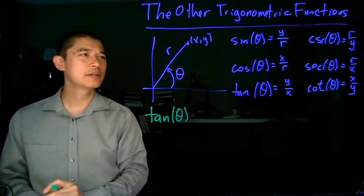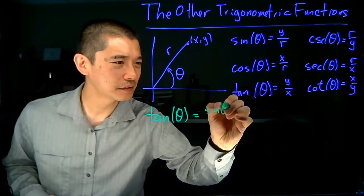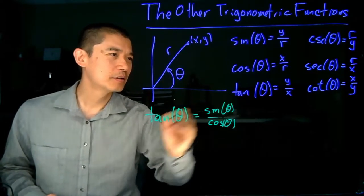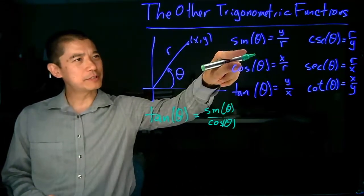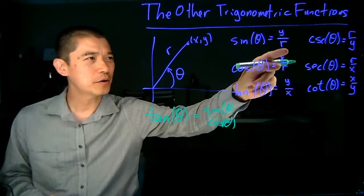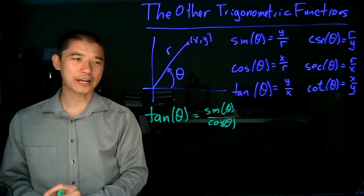Tangent of theta turns out to be sine theta over cosine theta. So let's sort of think through what happens. If we do sine theta over cosine theta, we have y over r over x over r. And those r's end up canceling out, so you just have y over x.